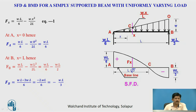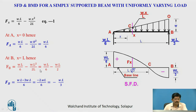FX equals WL by 6 minus WX square upon 2L. This is equation number 1. At X equals 0, FA equals WL by 6. At X equals L, FB equals WL by 6 minus WL square upon 2L, which gives FB equals minus WL by 3. Taking WL by 6 above the baseline as it is positive, and WL by 3 below the baseline as it is negative, joining these by a parabolic curve.